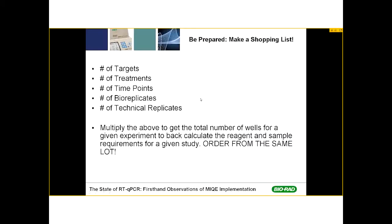It's important to be prepared when you're going to do an experiment. By being prepared, I mean make a shopping list. To make a shopping list, list the number of targets — meaning genes you intend to use — the number of treatments you intend to test, the number of time points, the number of biological replicates, and the number of technical replicates. By listing these numbers and multiplying them all together, you get a grand total that equates to the number of wells required in a given experiment, which tells you the number of reagents and sample requirements you'll need for the study.